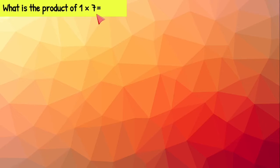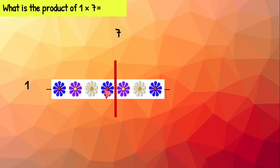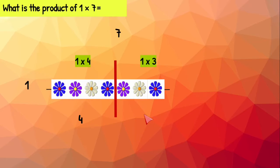What is the product of one times seven? We need one row with seven flowers on the row. We will label that one and seven — one times seven. Now we're going to cut the array by drawing a line through it. Now we have two smaller arrays on each side. On the first array we have one row with four flowers, which means one times four equals four. On the next array we have one row with three flowers, which equals three. Now we can put both of those arrays together by adding four plus three, which gives us seven. So we know that one row of seven equals seven.